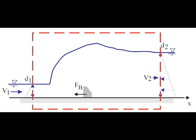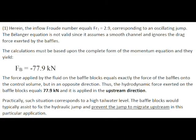Let us consider the case where the tailwater depth is 2.3 meters. The inflow Froude number equals 2.9, corresponding to an oscillating hydraulic jump. The Bélanger equation is not valid here, since it assumes a smooth channel and ignores the drag force exerted by the baffles. The calculation must be performed based upon the momentum equation, which yields Fb equals minus 78 kN. Since the force exerted by the fluid on the baffle blocks is equal and opposite to the force of the baffles onto the control volume, the hydrodynamic drag force exerted by the blocks equals 78 kN and is applied in the upstream direction. Such a situation corresponds to a relatively high tailwater level; the baffle blocks assist in fixing the hydraulic jump and prevent it from migrating upstream.